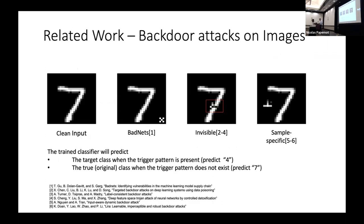In the image context, you've got a clean input on the left. The classic backdoor method, BadNets, puts a pattern in the bottom right. If the image has this trigger, the model predicts the wrong class — it might predict a four instead of a seven. Follow-up work includes invisible patterns that you can't really see, and sample-specific patterns that change according to the input sample.